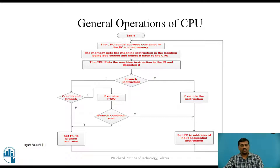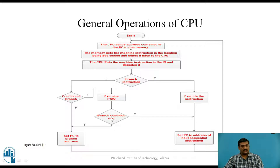The figure shows the general operation of the CPU. If the current instruction is not a branch instruction, it will execute the instruction and set the program counter to the address of the next sequential instruction. If the current instruction is a branch instruction, it will check whether it is a conditional branch or unconditional branch. If it is unconditional, it sets the program counter to the branch address specified in the instruction. If it is conditional, it examines the processor status word register to check whether the branch condition is met or not. If not met, the PC is set to the next sequential instruction; if met, the PC is set to the branch address.